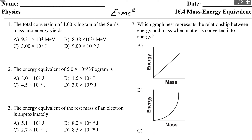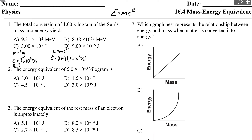Number one says the total conversion of 1 kilogram of the Sun's mass into energy yields what? The mass is 1 kilogram and C is equal to 3 times 10 to the 8 meters per second. We're looking for the energy. E equals MC squared, so the energy equals 1 kilogram times C squared. You get 9 times 10 to the 16, and the unit is going to be joules — that's choice D.